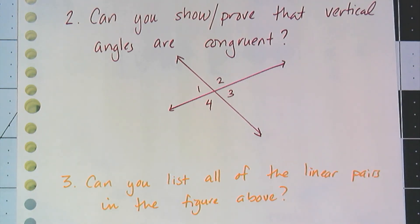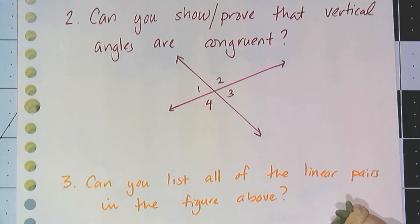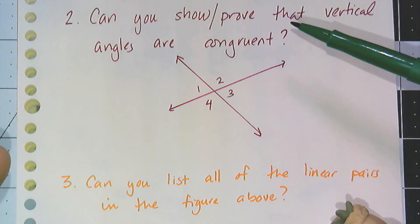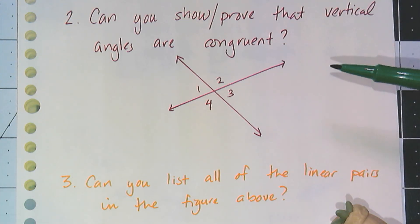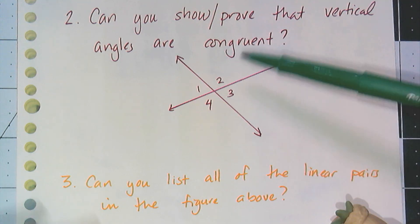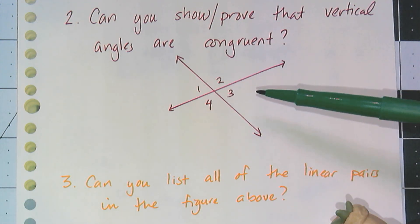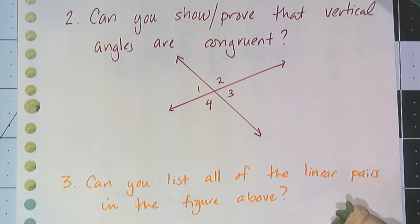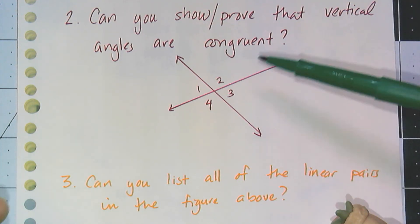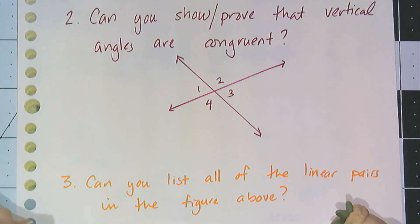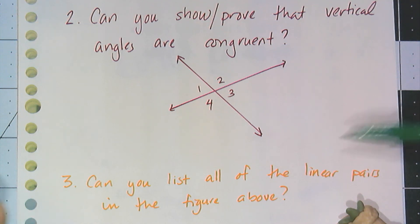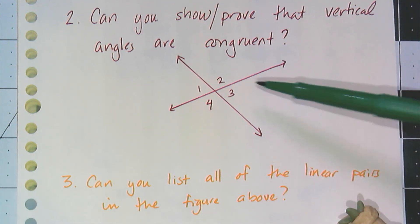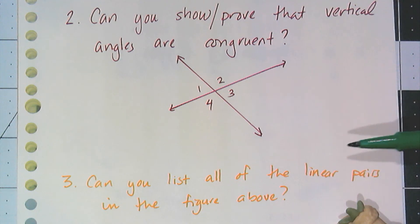Now two questions to consider. First, can you show, prove, or explain that vertical angles are congruent? Looking at intersecting lines, angles 2 and 4 appear congruent, and angles 1 and 3 appear congruent — but can you explain why? It's not enough for it to look that way; you have to argue why. If you have trouble with that, here's a helpful side question: can you list all of the linear pairs in the figure? There are quite a few. I'll leave you with those questions and see you in the next video.